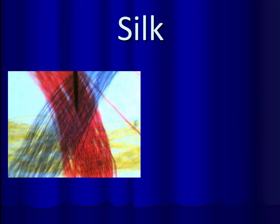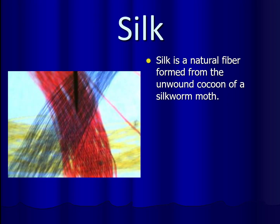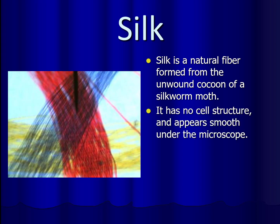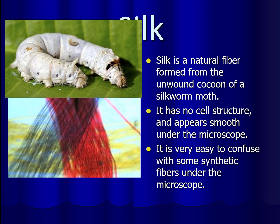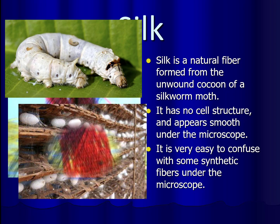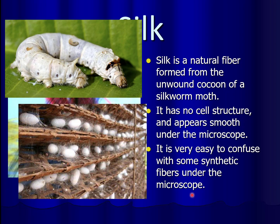Silk is a natural fiber formed from the unwound cocoon of a silkworm moth, and it has no cell structure. It almost appears like a synthetic fiber when we look at it under the microscope, making it very easy to confuse with some synthetic fibers. Silk comes from the silkworm, which eventually forms a chrysalis, and the entire cocoon is made up of silk fibers.